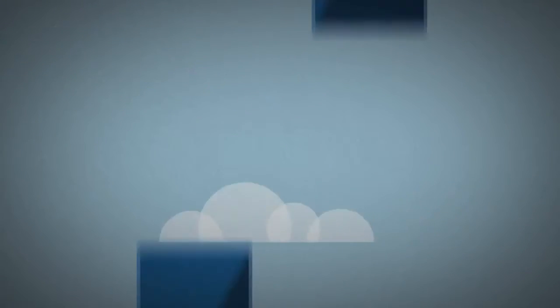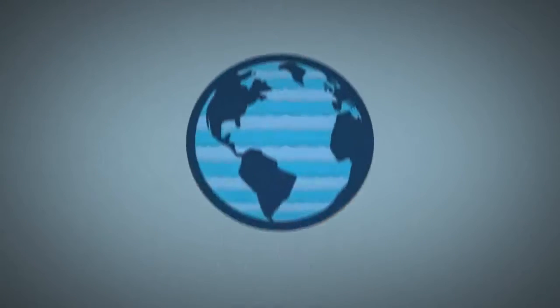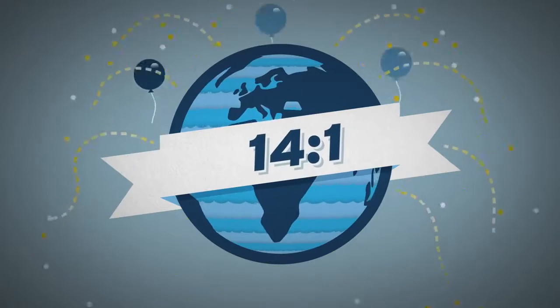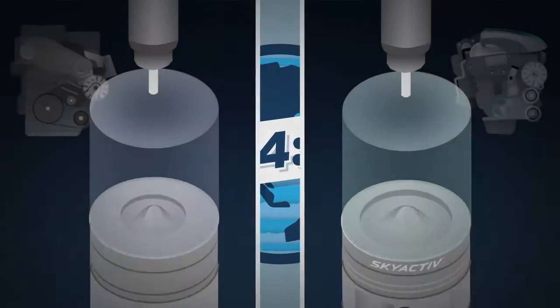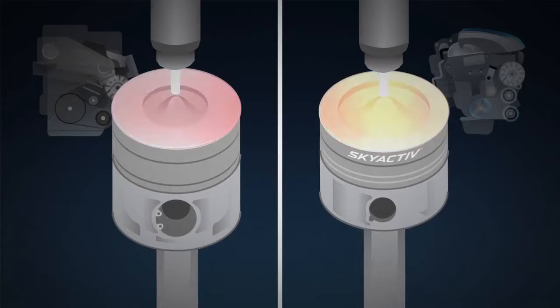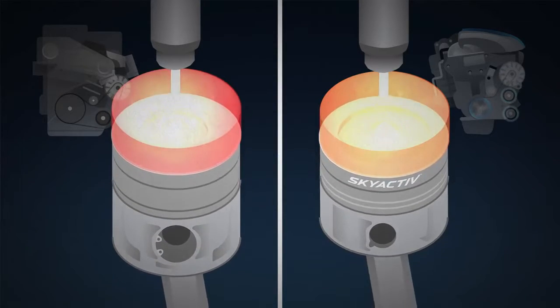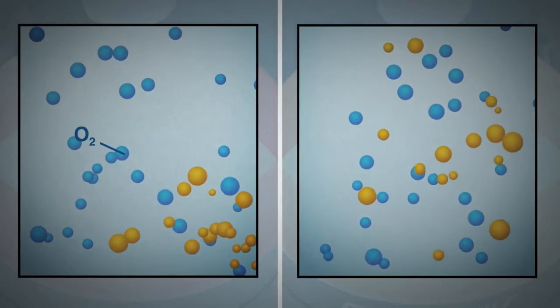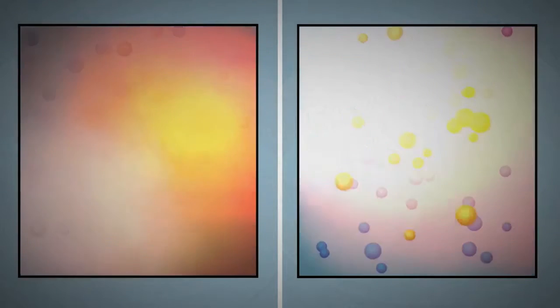First, we defied convention by dropping the compression ratio to the lowest in the world for a diesel, 14 to 1. This delays combustion by just half a millisecond, which is enough time for the air and fuel to mix more thoroughly, reducing hot spots of oxygen and fuel that would otherwise turn into pollutants.